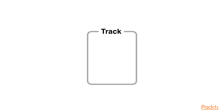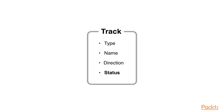Each track is going to have a type — this indicates whether the track is a walking track, a mountain bike track, a horse track or an access road. A name — not every track has a name but for those that do we need to remember it. A direction — some trails and access roads are bi-directional while others can only be used one way. And finally a status — this indicates whether the track is currently open or closed.